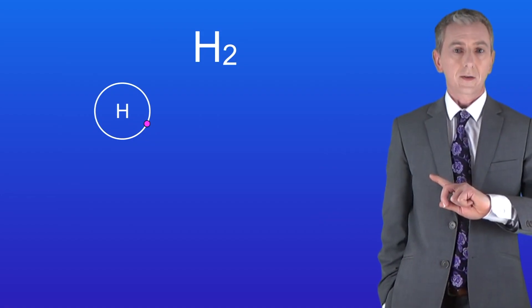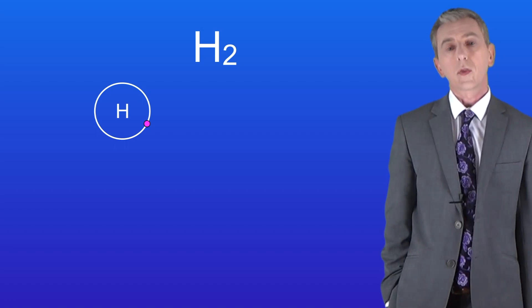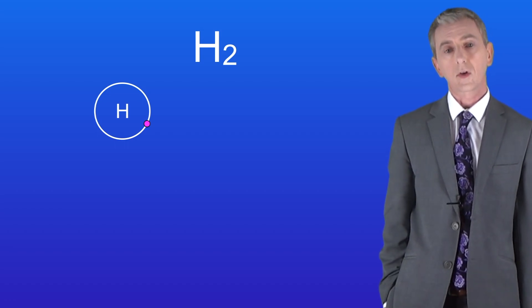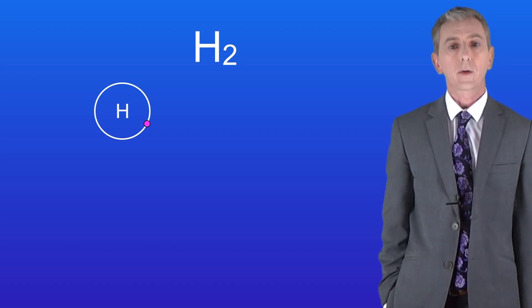This shows a hydrogen atom and as you can see it only has one electron. Now this energy level can hold a maximum of two electrons so this hydrogen atom needs one more electron to achieve a full outer energy level.